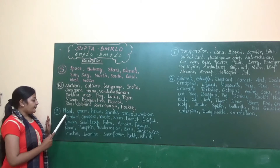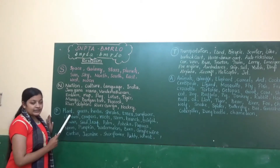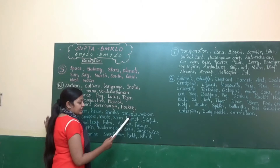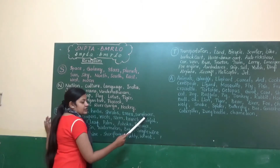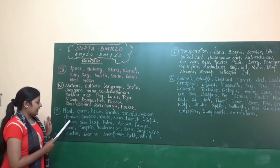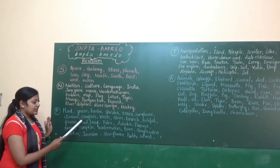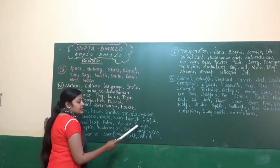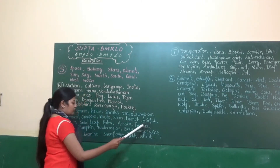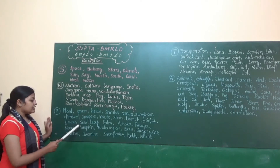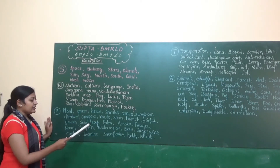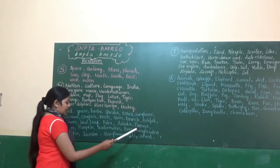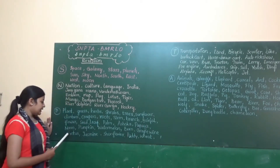Next P — Plants: grass, herbs, shrubs, trees, sunflower, climbers, creepers, roots, stem, branch, brinjal, flower, leaf, palm, Ashoka, papaya, neem.